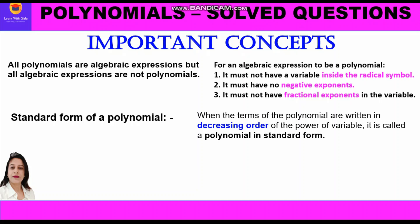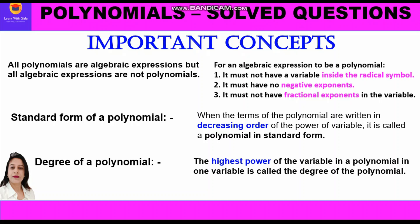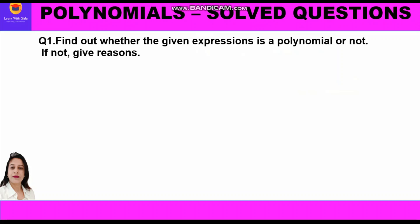The standard form of a polynomial is when the terms are written in decreasing order of the power of the variable — from higher power to lower power. The degree of a polynomial is the highest power of the variable in a polynomial in one variable. To find the degree, we look for the highest power of the variable. Now let us start with the first question.